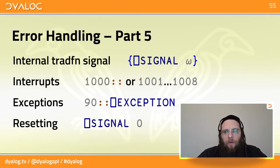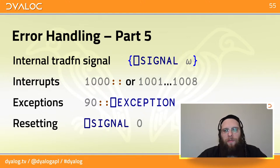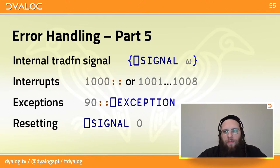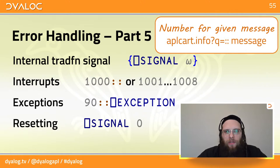Overview of what we've gone over today: you can wrap QuadSignal to create a temporary capsule that can be left with QuadSignal, keeping the error inside the current tradfn. Interrupts are in the thousands range — get all of them with 1000. Exceptions are special error number 90 — get details from QuadException. And the reset signal is QuadSignal zero. Don't forget you can get the number for any error message by searching for it on APLcart — use two colons to make sure you get an error.